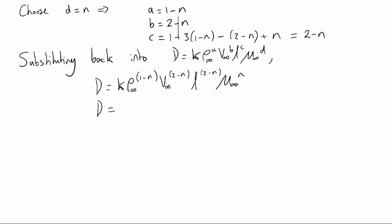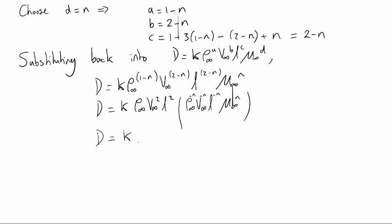If we rearrange this we get D = K (rho infinity V infinity squared L squared) times (mu infinity / rho infinity V infinity L)^N. Hopefully at this point, and of course in the back of your mind when you're doing this question you're thinking to yourself we've got to try and find a term that looks like Reynolds number, and we found it, because this term here is 1 over Reynolds number.